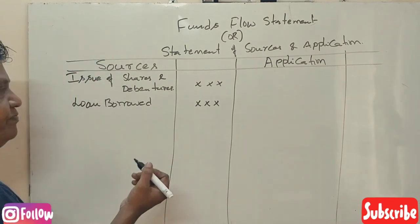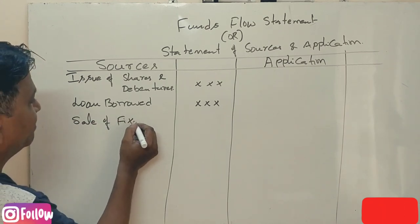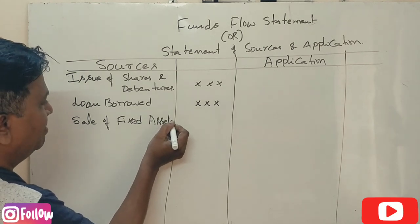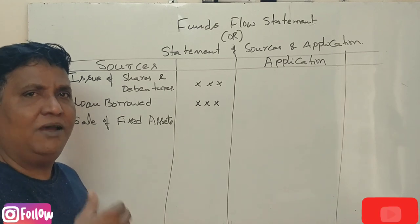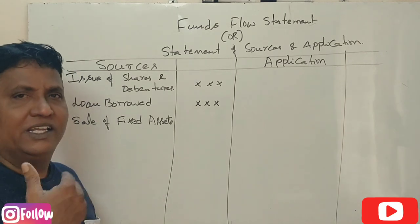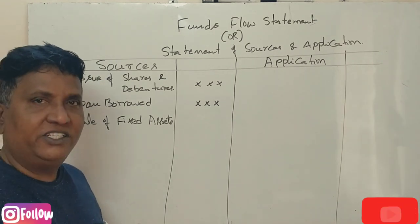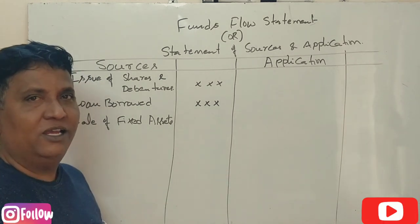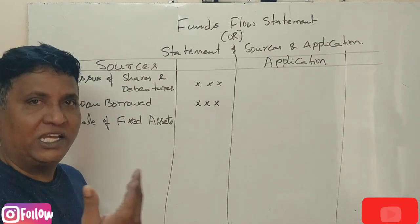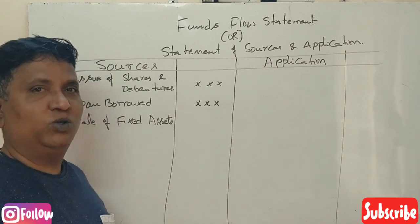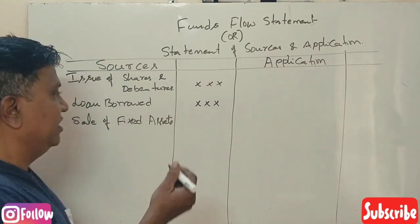The third source is the sale of fixed assets. Fixed assets include land and building, old plant and machinery, old furniture and fixtures, old motor vehicles, and trademarks. When a company sells these fixed assets, it generates an inflow of funds.